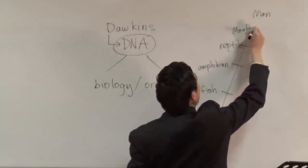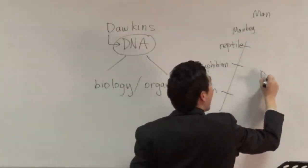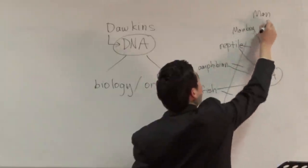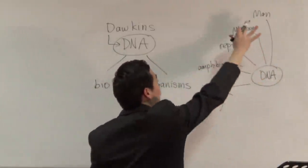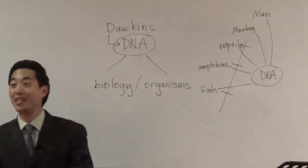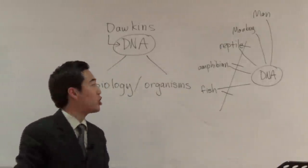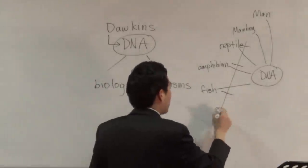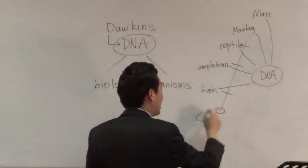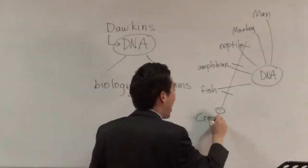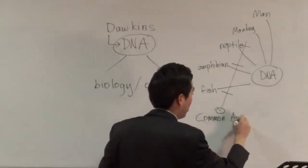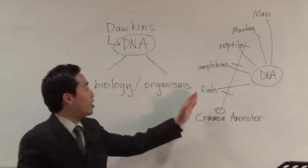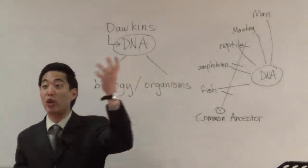Everything consists of DNA. But within the DNA pattern, it fits this ladder — that's what they said. So because of that, Richard Dawkins said that we all share a common ancestor. It shows that within the DNA, everything seems to show a common ancestor. There is some sort of beginning of DNA that showed this pattern eventually, and we all share it together.